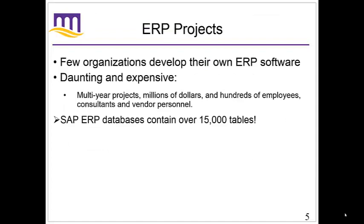Very, very few organizations develop their own ERP software. The big reason is that this is a massive piece of software. In order to develop it yourself, you'd need many years, millions of dollars, hundreds of employees, consultants, and vendors — and that is if you use an existing ERP system. If you had to develop it yourself, you're talking 10 times that amount easily. SAP is the name of a company that develops the largest enterprise resource planning software out there. It contains over 15,000 separate tables. Compare that to a class exercise with maybe five or six tables — we're talking 15,000 tables. That's how big it is.